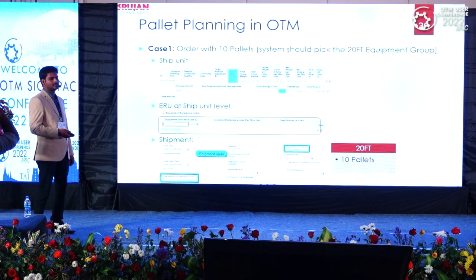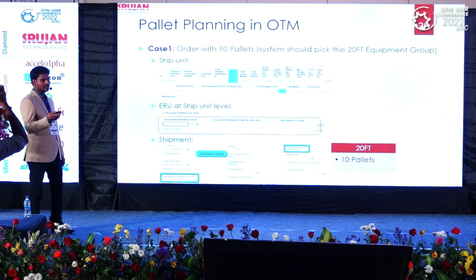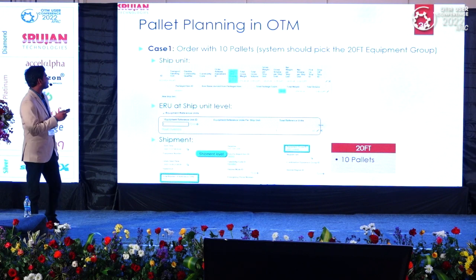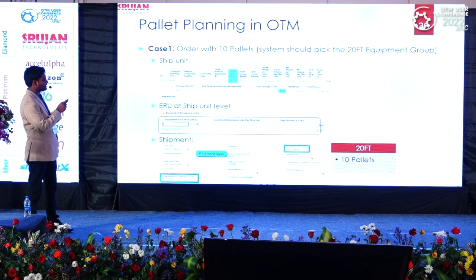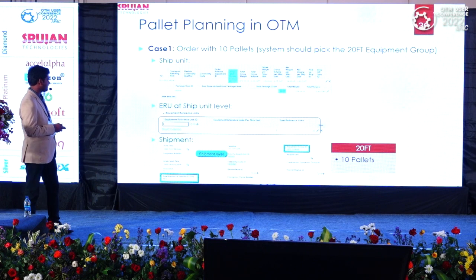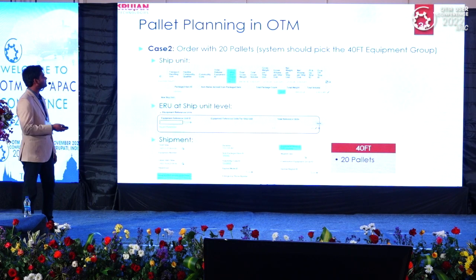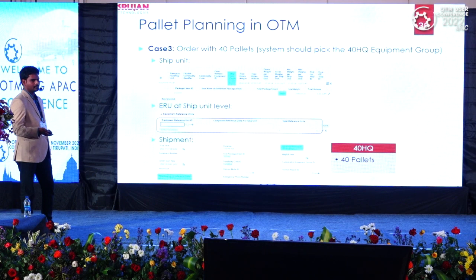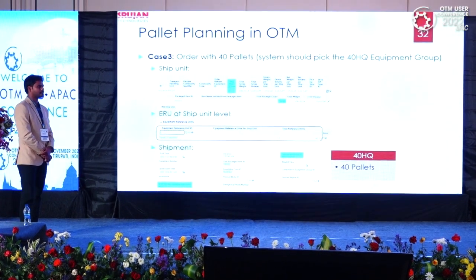For a simple scenario with 10 pallets using the big pallet configuration — 480 units per pallet times 10 equals 4,800 units — the ERU at the ship unit level must be updated with that pallet count in the ship unit equipment reference unit section. The system then checks the count and picks the right equipment group. Planning this order into a shipment, it picks the 20-foot container for 10 pallets. Similarly, with 20 pallets, it picks the 40-foot container. Weight and volume are not the concern here — only the number of pallets drives the planning.